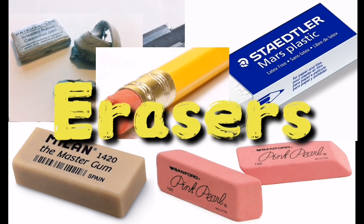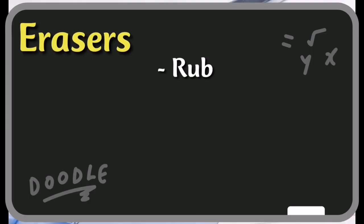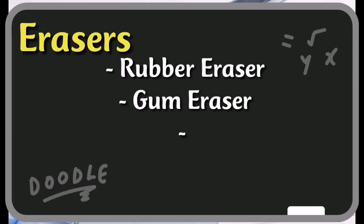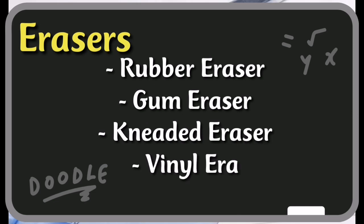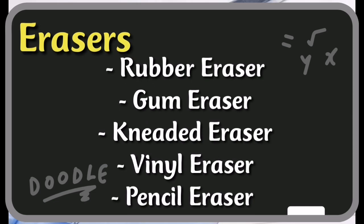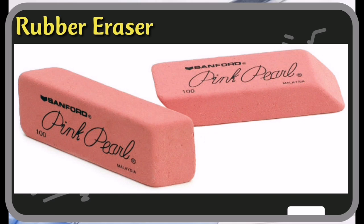Eraser is an instrument that is used to erase unnecessary marks, correct wrong drawings, and make your drawing clean and neat. There are five types of eraser to choose from: rubber erasers, gum eraser, kneaded eraser, vinyl erasers, and pencil erasers.